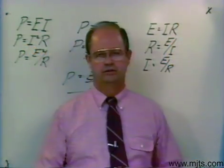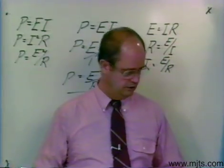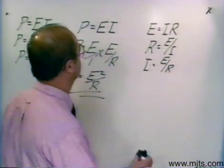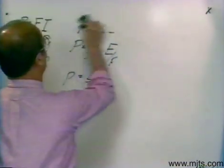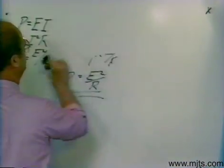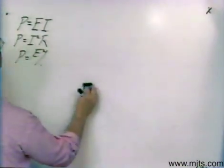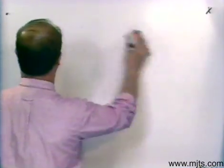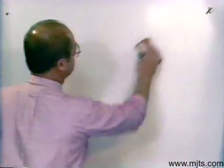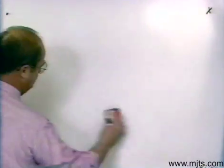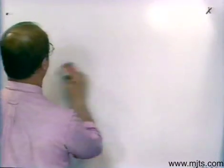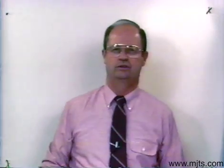Let me get rid of this mess that I've got on the board. Let's start over and we'll center everything up here. We'll take all the formulas that we know to be true and isolate each of the variables in all the equations that we know to be true.